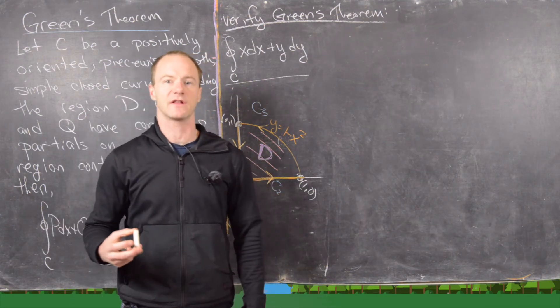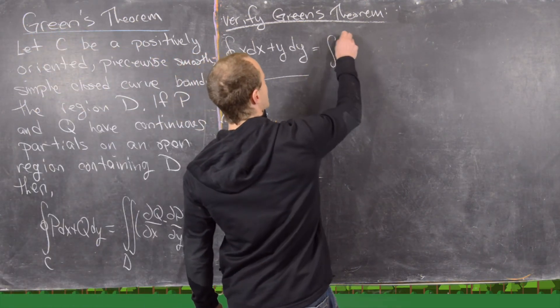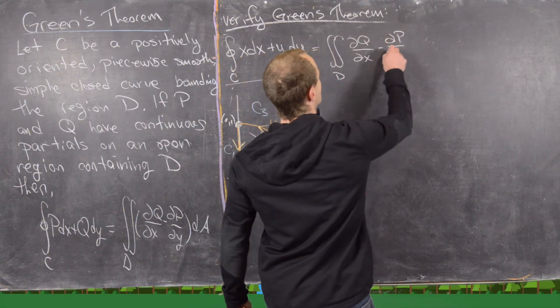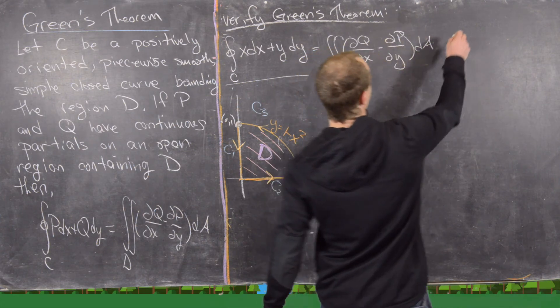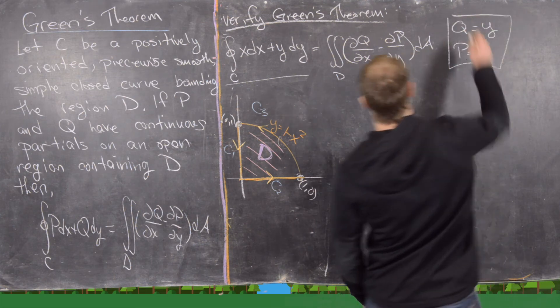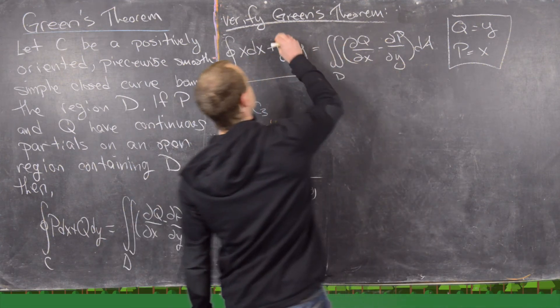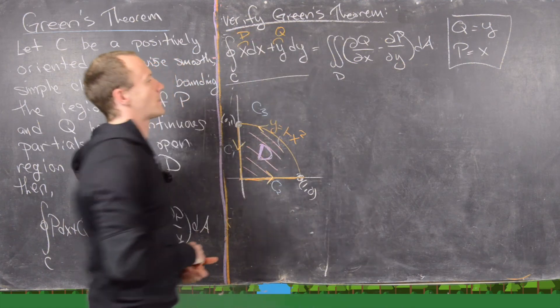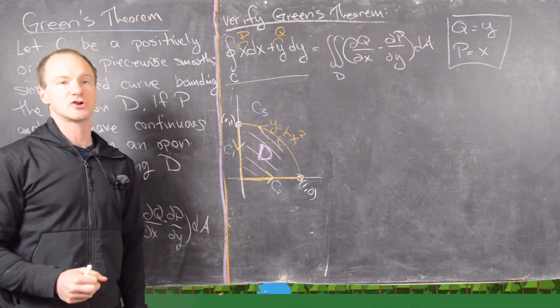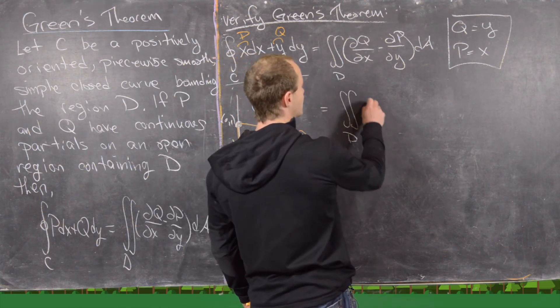Okay, we just got done calculating the line integral, and now we're going to calculate the corresponding double integral. So notice by Green's theorem, this should be the integral over D of partial Q partial X minus partial P partial Y dA, and notice here Q is equal to the function Y and P is equal to the function X. Because Q is the function in front of this DY component, and P is the function in front of the DX component. Okay, great. But notice partial Q partial X is 0, and partial P partial Y is 0. So this is in fact the double integral over D of 0 dA.